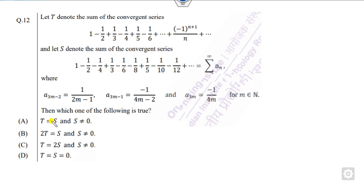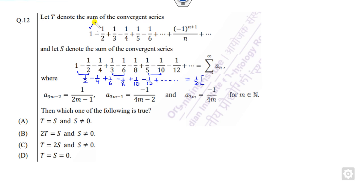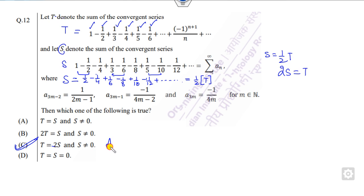Look at the rearrangement series question. If you look at the options, they are multiplied by 2 or they are equal. If you closely look, I can say: 1/2 from the first pair, 1/4 from the next, this is again 1/6, then 1/8, then 1/10, then minus 1/12 and so on. If you take half as common from here, you get 1 minus 1/2 plus 1/3 minus 1/4 plus 1/5 minus 1/6 and so on. This series is T, and the rearranged series S equals half of T. So 2S equals T, which is the correct option.